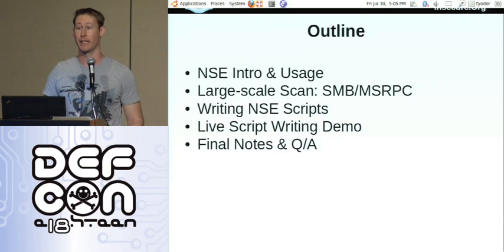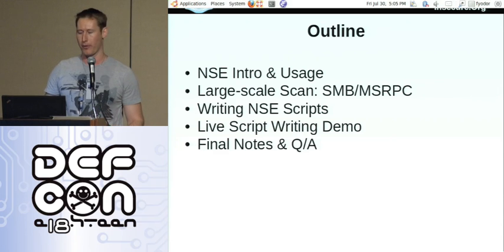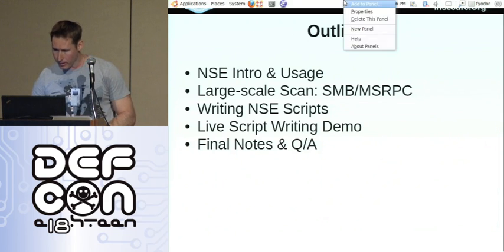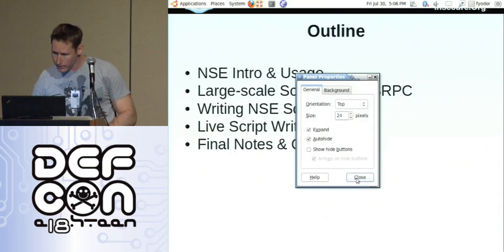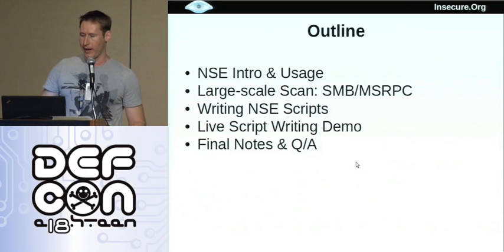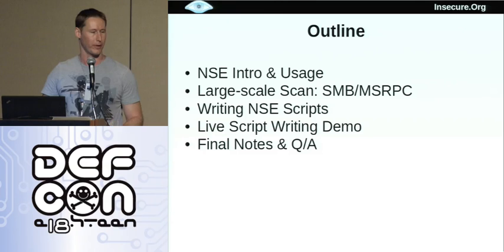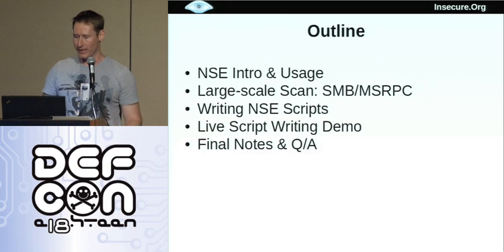I'm going to start with just a little outline so you know what we're going to cover in this talk. First, we're going to give a quick introduction to the Nmap scripting engine — what it is, how to use it, why we built it — and then we're going to give you a demo to show you the power of the Nmap scripting engine by doing a large-scale scan of more than a million IPs of a major corporation. After that, we'll go into writing your own NSE scripts. David has a great demo where he writes one from scratch right in front of you in front of 500 people. Hopefully he doesn't have any syntax errors. Then we'll do final notes and move to the Q&A room.